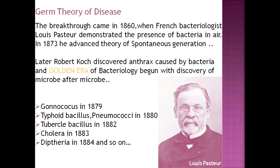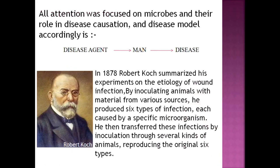The first theory with scientific evidence was germ theory. It began when French bacteriologist Louis Pasteur found bacteria in air and advanced the theory of spontaneous generation. Then Robert Koch came into the limelight — this is known as the golden era of bacteriology. He discovered anthrax was caused by bacteria, followed by discoveries of gonococcus, typhus, cholera, and diphtheria.